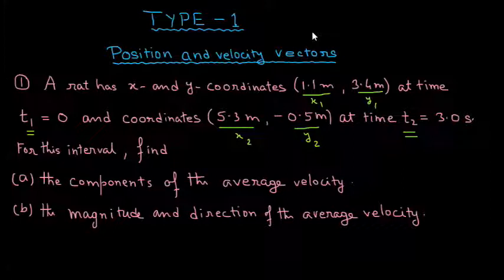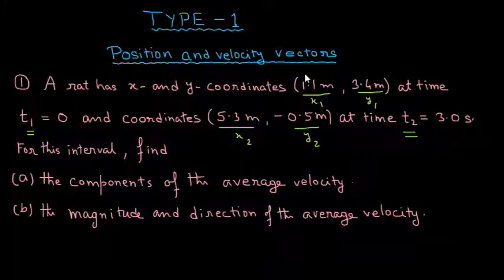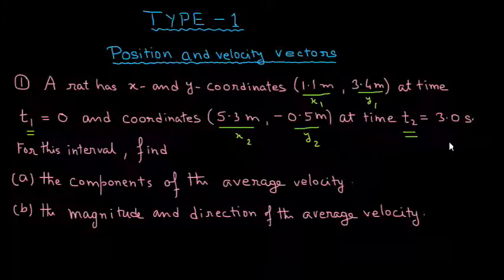First question: a rat has x and y coordinates of 1.1 m and 3.4 m at time t1 = 0, and coordinates 5.3 m and −0.5 m at time t2 = 3 seconds. For this interval, find the components of the average velocity and the magnitude and direction of the average velocity.